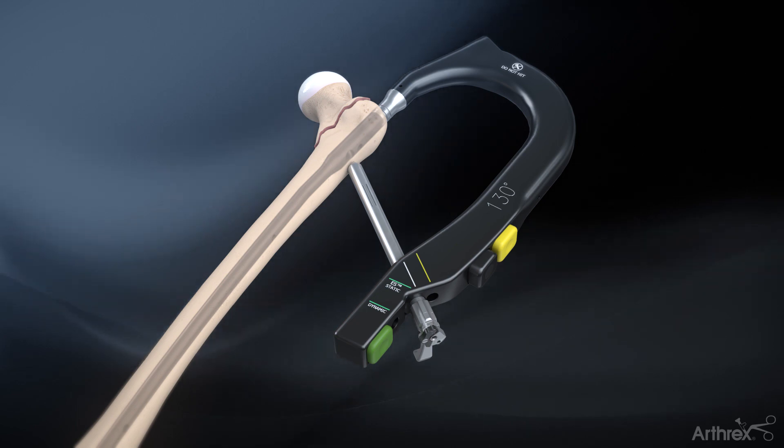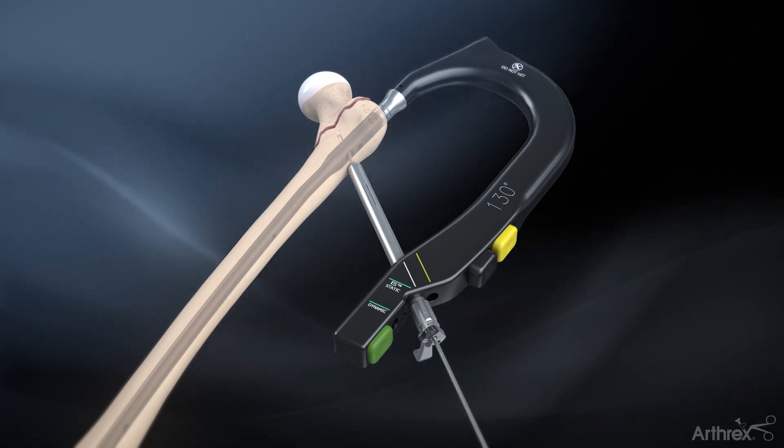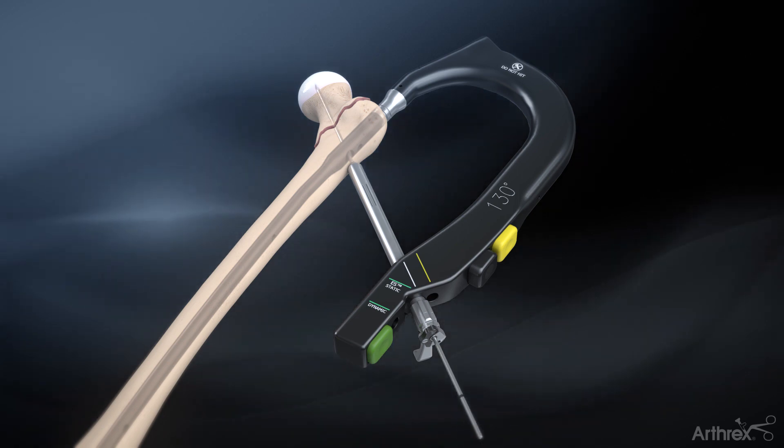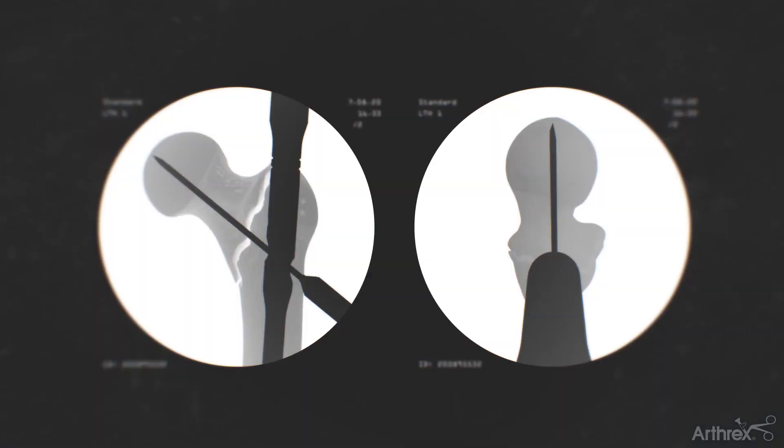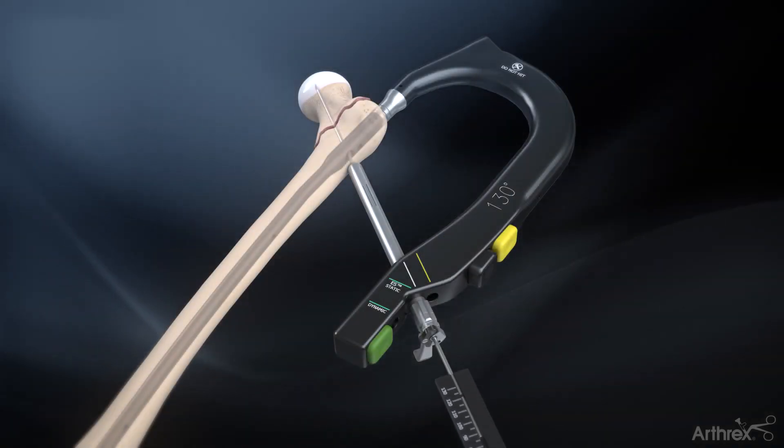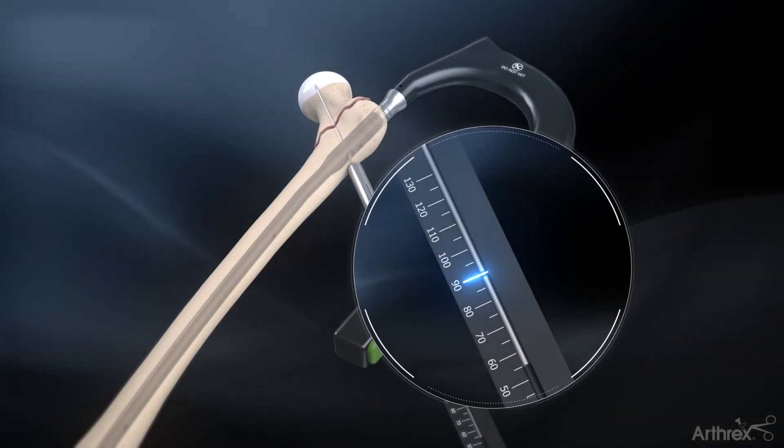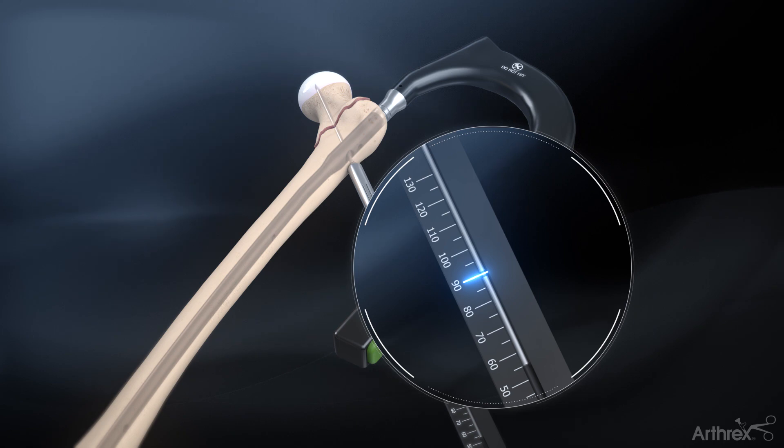Remove the obturator and place the 3.2 mm lag screw guide pin through the pin guide. Verify the pin depth and trajectory using fluoroscopy. Place the guide pin depth gauge with the flat end against the pin guide under the 3.2 mm lag screw guide pin and read the measurement.